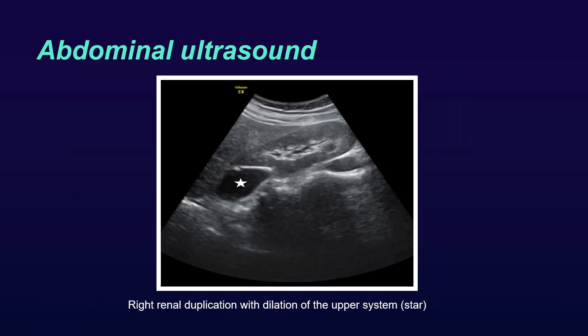Abdominal ultrasound is performed showing a right renal duplication with dilation of the upper system, marked with a star.